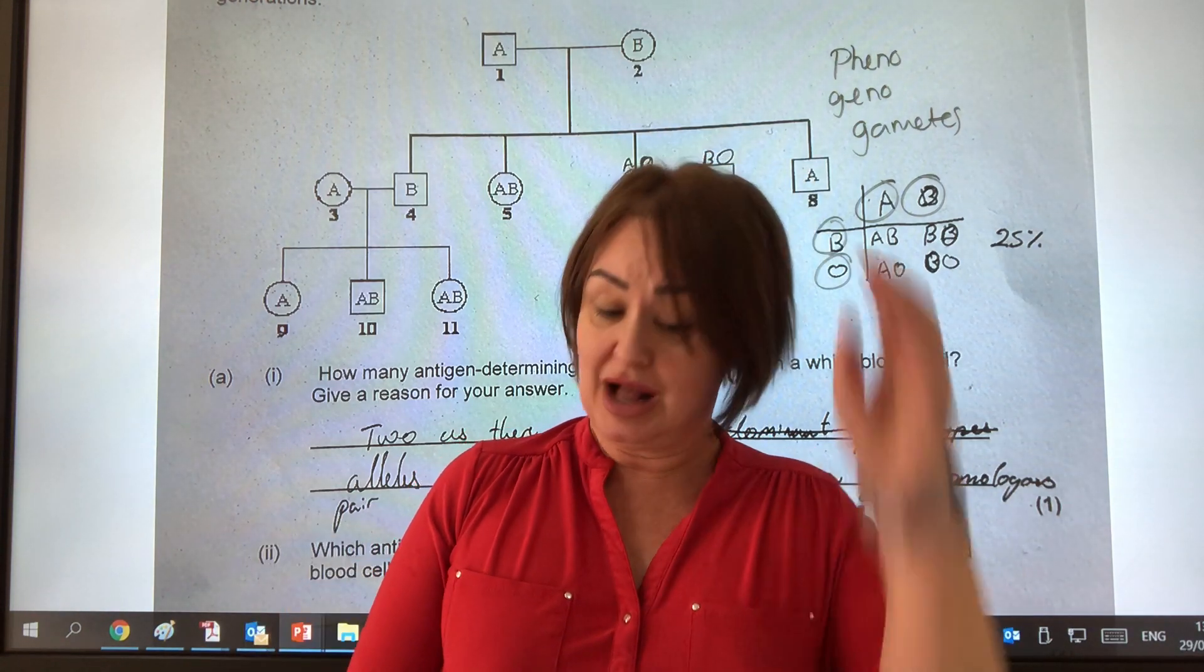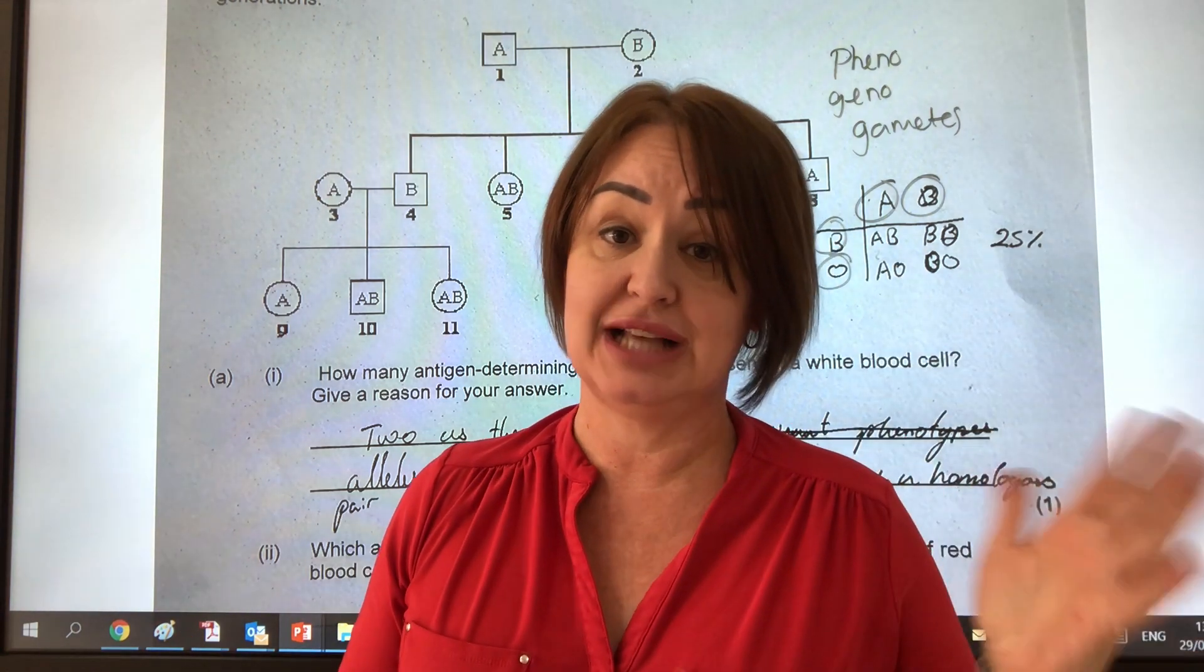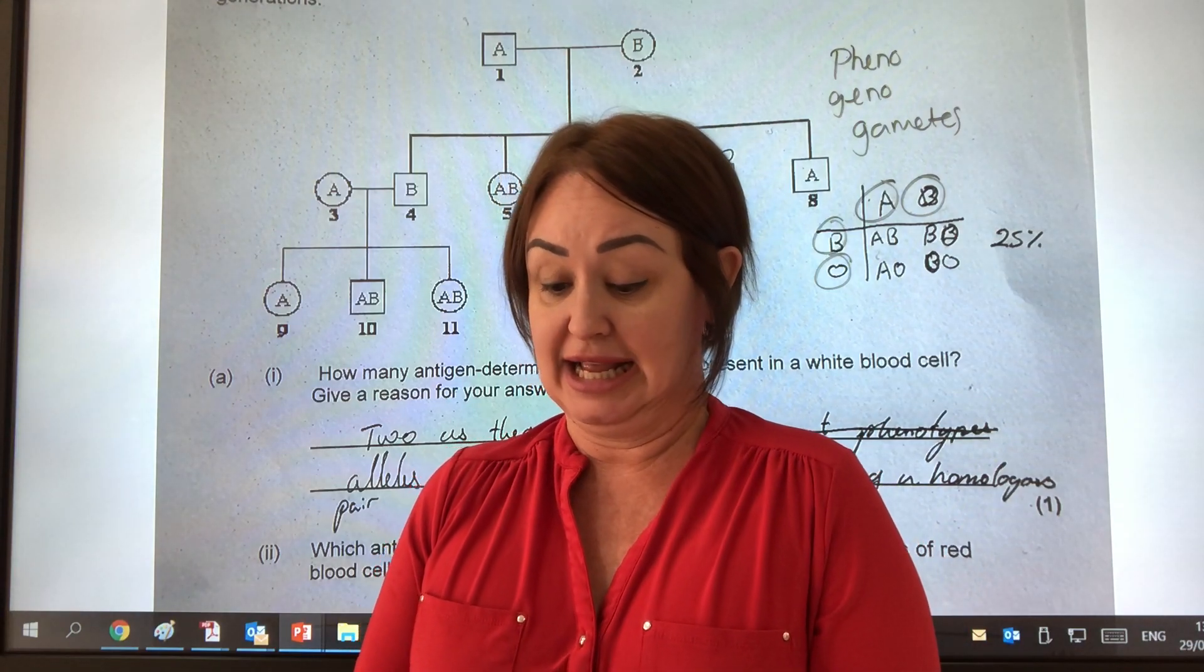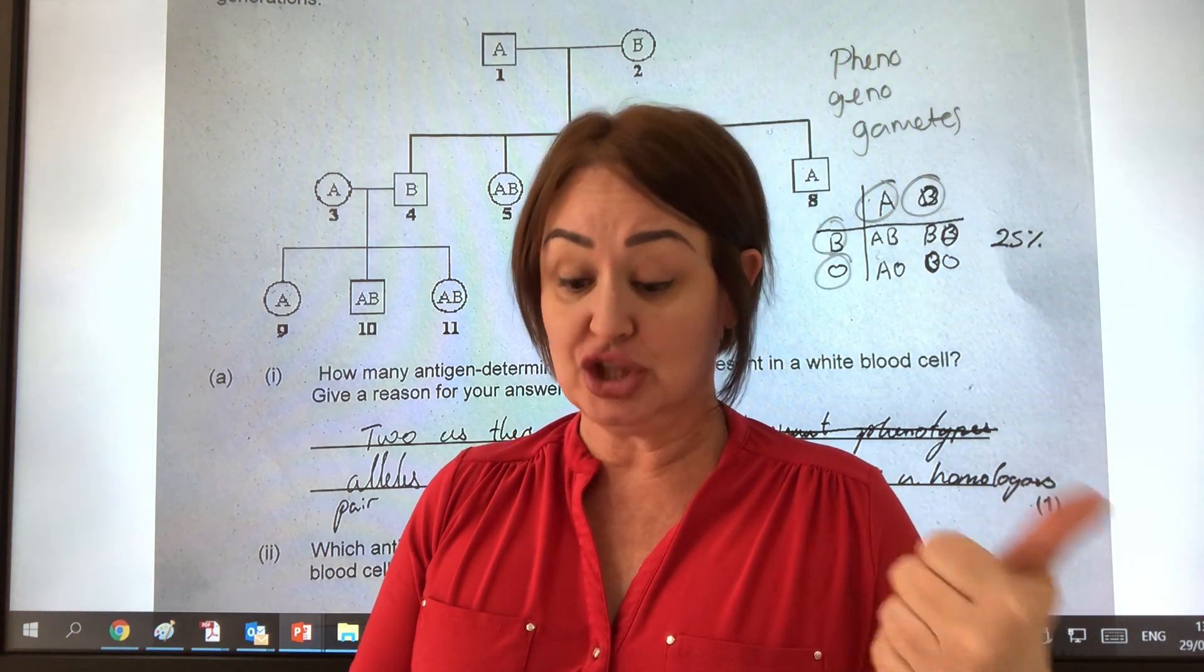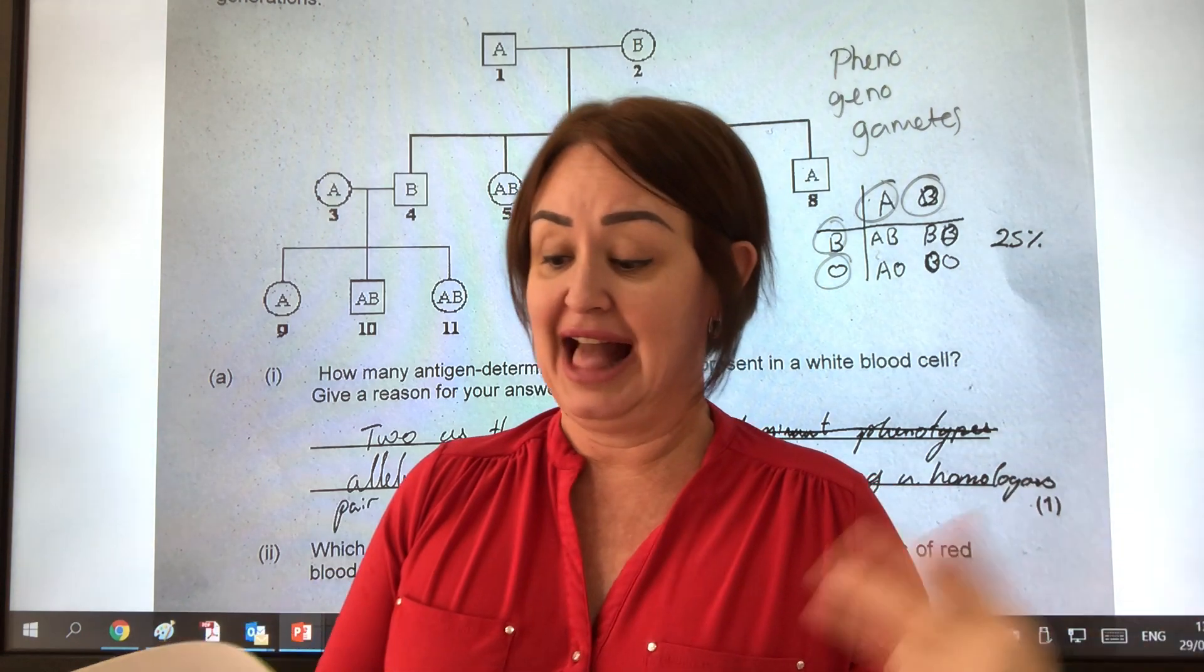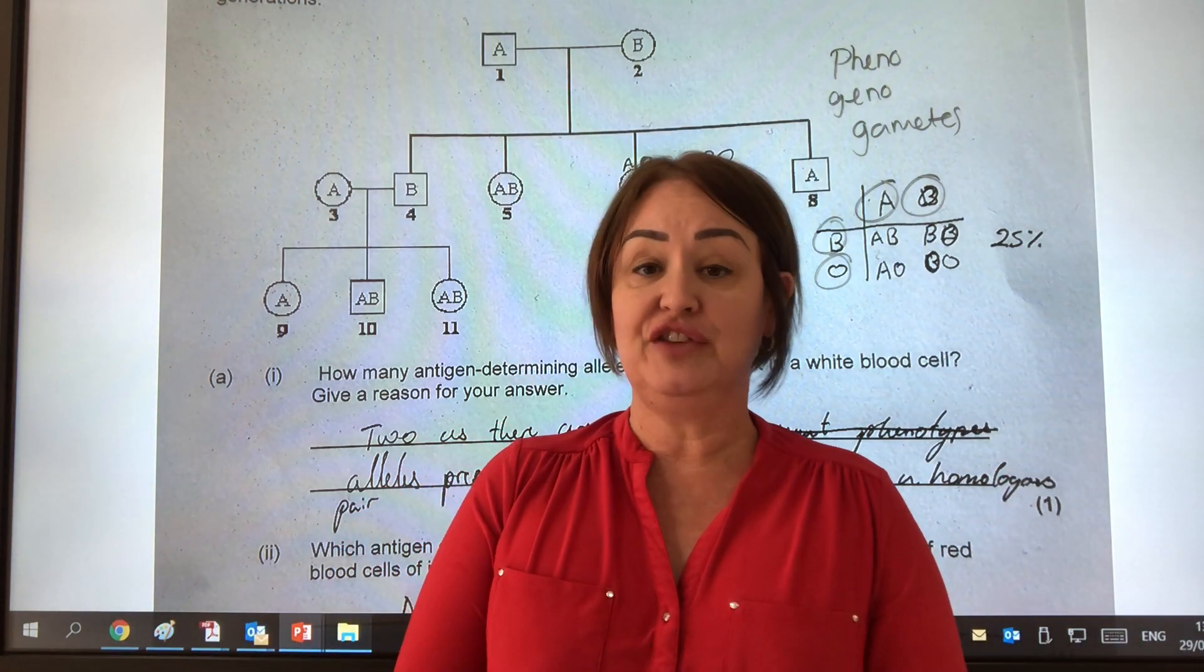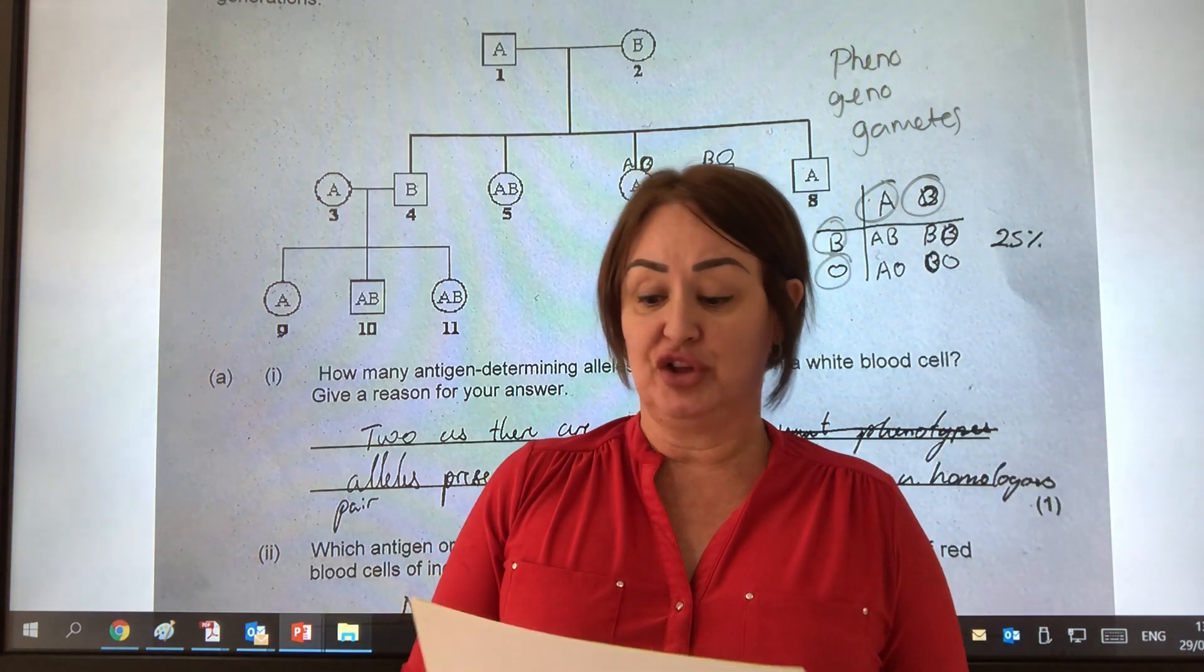So where were the three marks? Well, there was a mark for saying there was a one in eight chance, i.e. a quarter times a half. Also, a mark for saying there was a 25% chance of the offspring being blood group A. And there was a mark for the explanation saying that half will be male. So even if you had done the calculation, you might have got those marks.